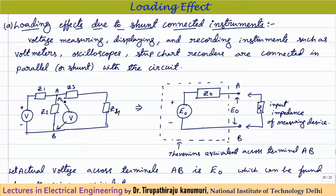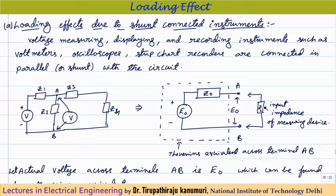Thevenin's equivalent circuit gives the open-circuit voltage across the two terminals and the open-circuit impedance Z0. I represent the ideal voltage as E0 in series with Z0. Under ideal conditions, the voltage across terminals A and B equals E0. When the instrument with impedance ZL is connected across terminals A and B, it draws current, changing the circuit characteristics.